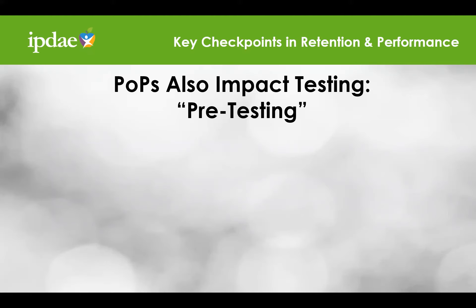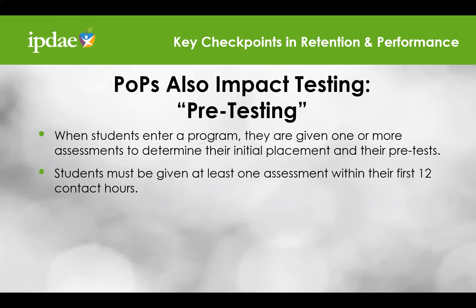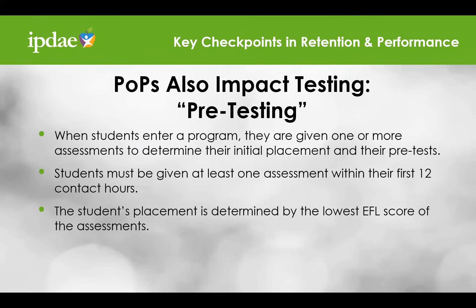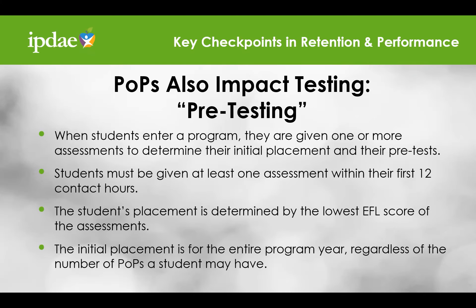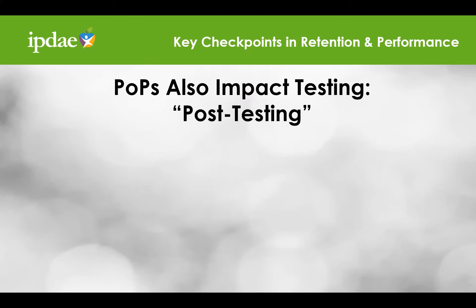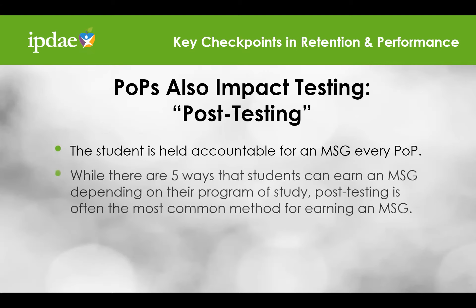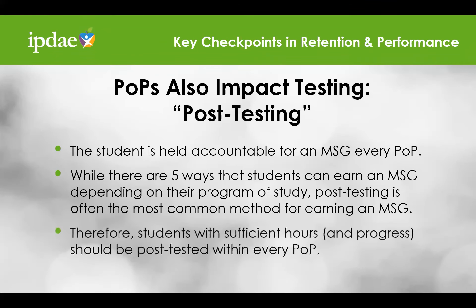POPs also impact pre- and post-testing. When talking about pre-testing, students must be given at least one assessment to determine the lowest educational functional level, or EFL, during their first 12 contact hours. This initial placement, determined by the lowest EFL score, is for the entire program year regardless of the number of POPs a student may have. When talking about post-testing, it's critical to keep in mind that a student is held accountable for an MSG for every POP. There are five ways students can earn an MSG depending on their program of study, but post-testing is the most common. Therefore, students with sufficient hours and progress should be post-tested within every POP.